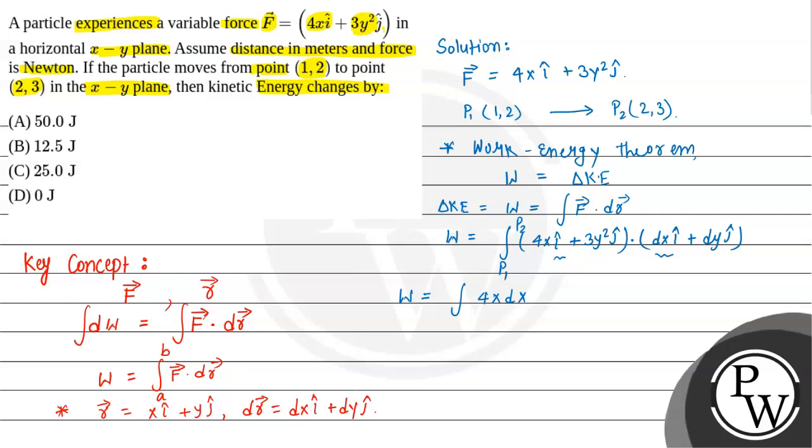4x dx. Now x varies from point P1 where coordinate is 1 to point P2 where coordinate is 2, so this is 1 to 2 for x component. Then plus 3 times y² dy, where y for point 1 is 2 and for point 2 is 3.